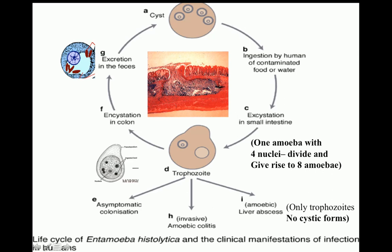With passage of time, the host develops resistance. The intestinal lesions start healing and the patient starts forming normal stool. The trophozoites move out of the intestinal mucosa into the stool and undergo encystation — where a cyst wall is produced around the trophozoite — resulting in formation of a uninucleated cyst. This uninucleated cyst is excreted in the feces and undergoes further development, finally resulting in the tetranucleated cyst.